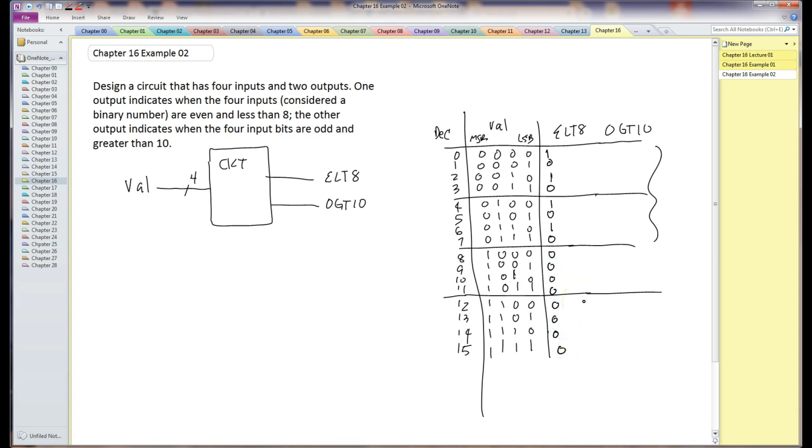The other output is when it's odd and greater than 10. This is what I'm looking at. These are the values that are greater than 10. So this one's 11, greater than 10, 13, and 15. Everything else is a 0.